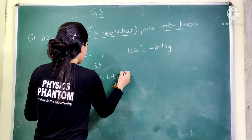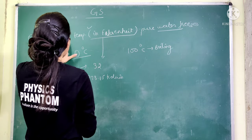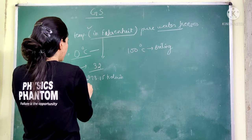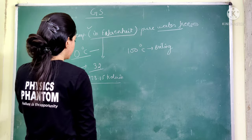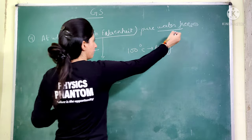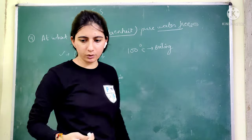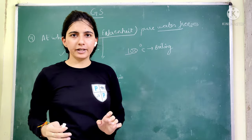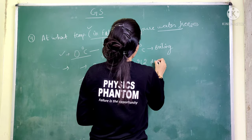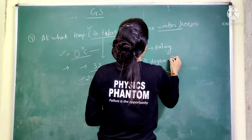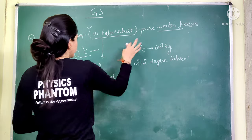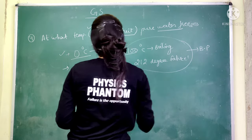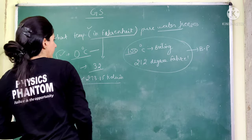There are three temperature scales to remember. The freezing point of water in Celsius is 0°C, in Fahrenheit it is 32°F, and in Kelvin it is 273.15 K. The boiling point of water is 100°C in Celsius and 212°F in Fahrenheit.